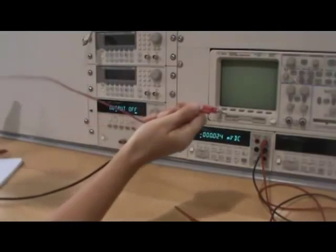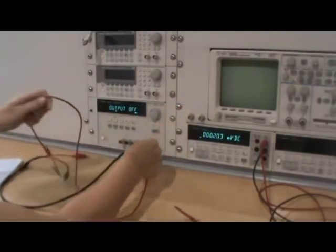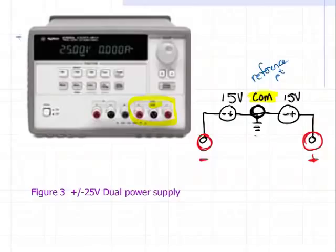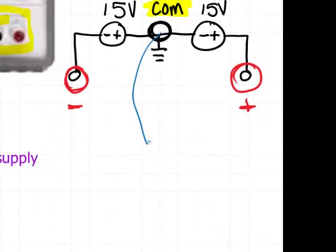Remember, voltage potential is always a difference between two points. So think about a scenario where you're climbing a long stairwell. You can go up the stairs, down the stairs. Arbitrarily, just set one point, we'll call that COM, to one level in the stairwell.